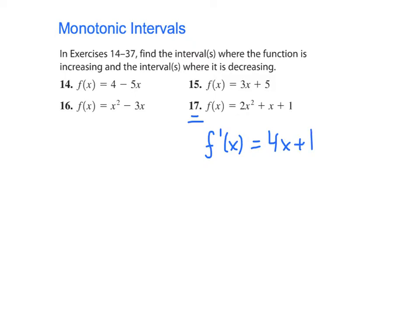So you'll notice I have one critical point here. If I set this equal to 0 and I solve, I get x equals negative 1 fourth or negative 0.25.